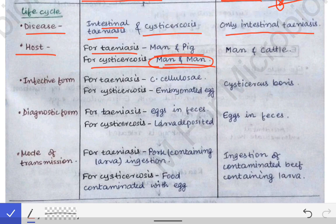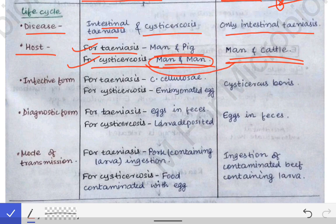The egg penetrates the intestinal mucosa, reaches the blood, and through blood gets implanted into the skeletal muscle of man, thereby causing cysticercosis. That is why both the definitive and intermediate host for cysticercosis is man and man. For Taenia saginata, the definitive and intermediate hosts are man and cattle, and since cysticercosis-like condition does not occur in saginata, man cannot act as an intermediate host.